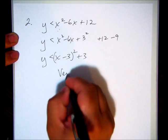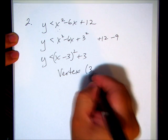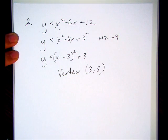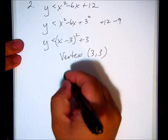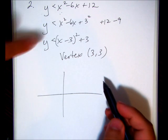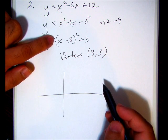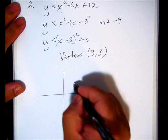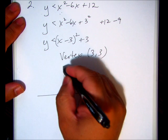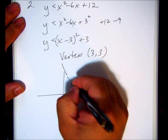So my vertex is at (3, 3). And it's going to be facing upward because the leading coefficient or a is 1.